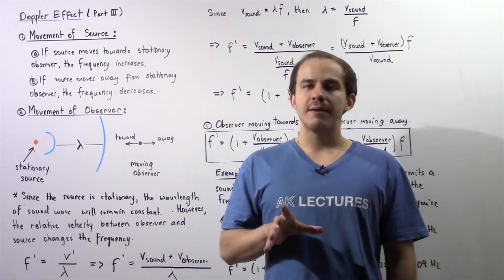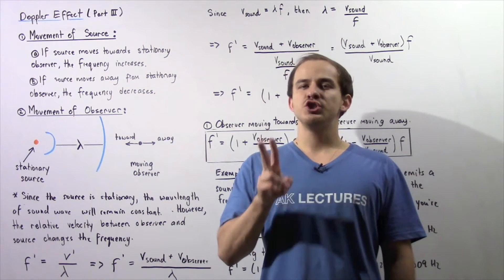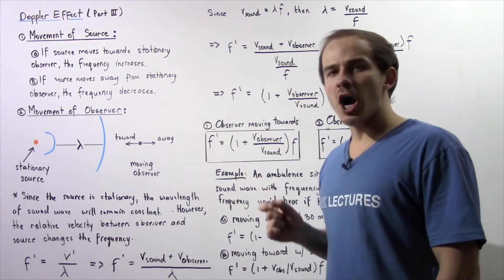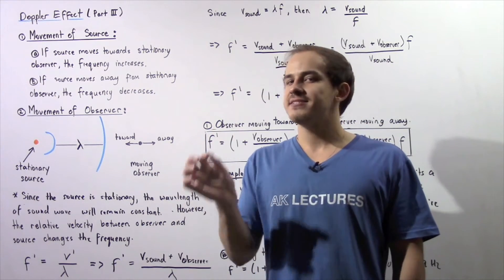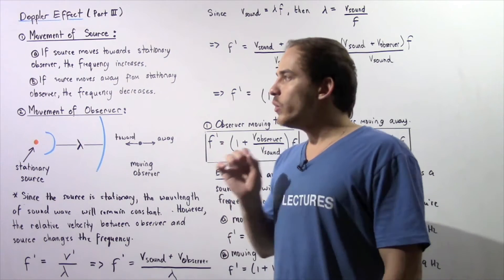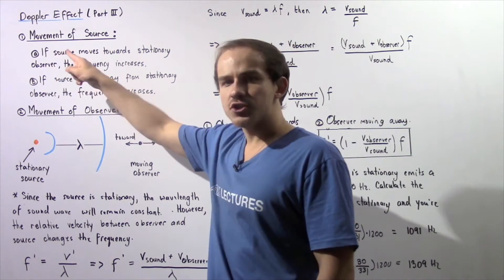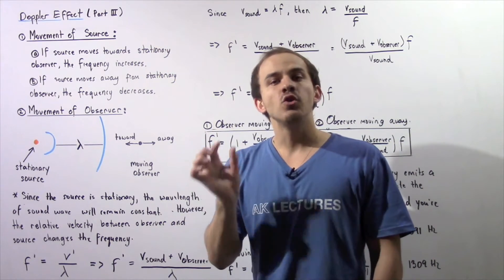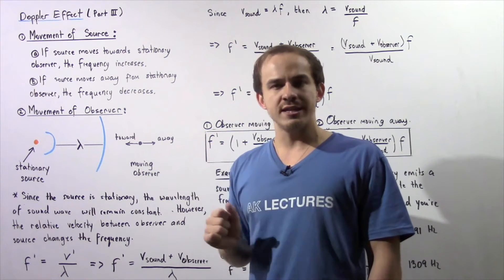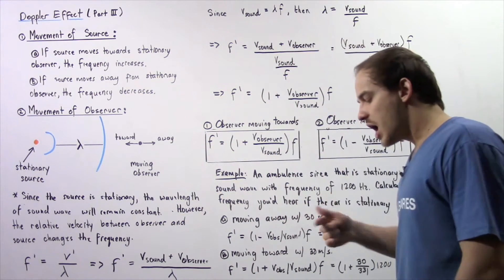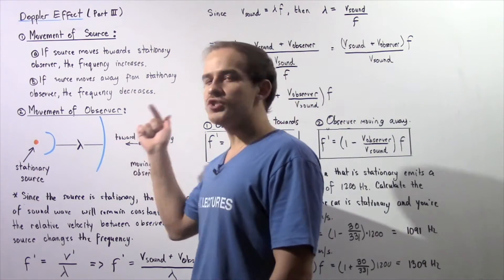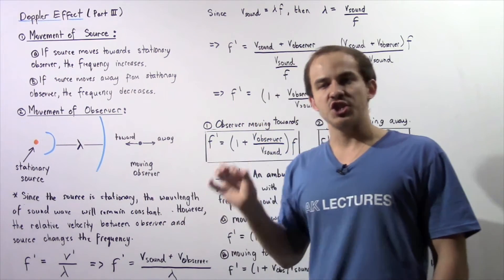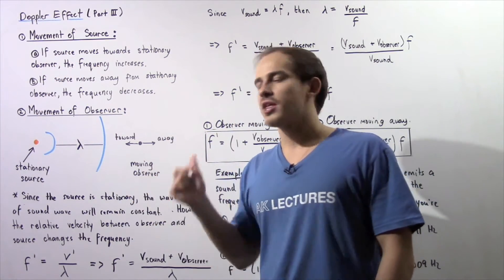In the previous two lectures we described the Doppler effect using two different scenarios. In both scenarios we described the movement of the sound source relative to a stationary observer. In scenario one, if the source moves towards the stationary observer, the wavelength decreases and the frequency increases. On the other hand, if the sound source moves away from the stationary observer, the frequency decreases because the wavelength increases.